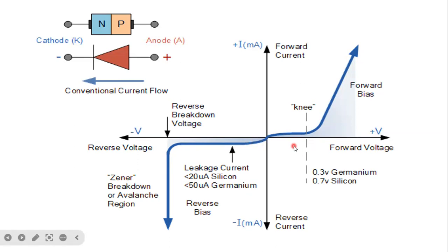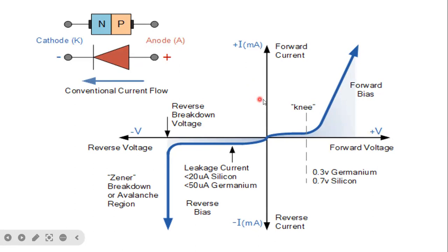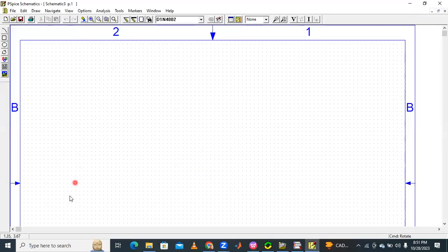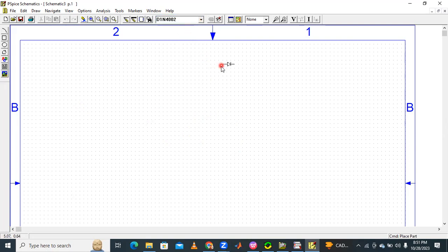This is a simple introduction to the characteristics of the diode. We can understand the characteristics by using PSpice — practically by simulating the diode. Open PSpice schematic. In the schematic, take one diode: D1N4002. Place it and press Ctrl+R to rotate.